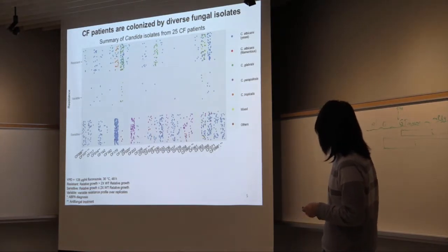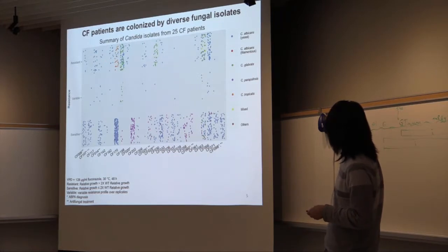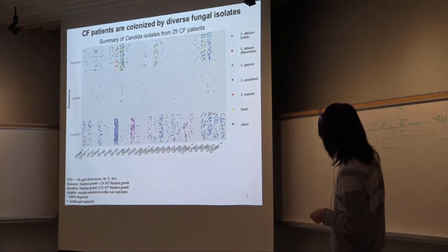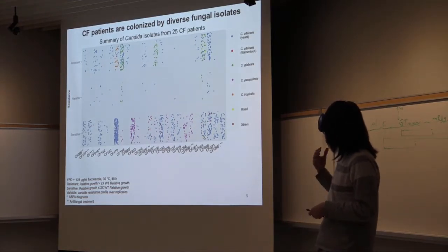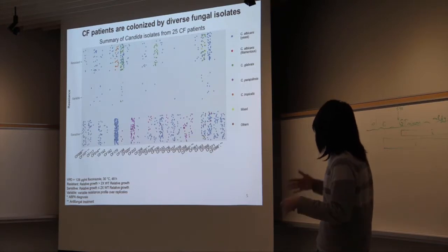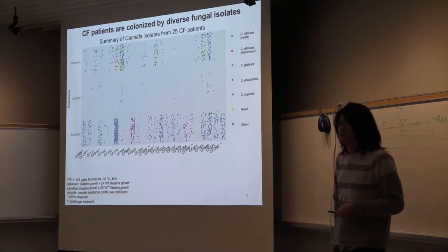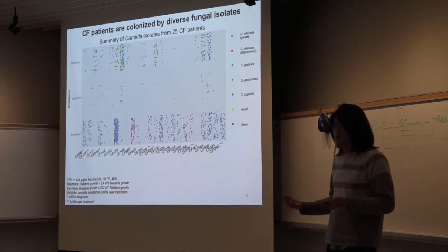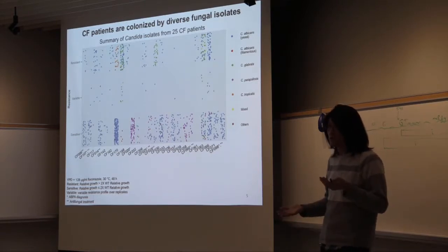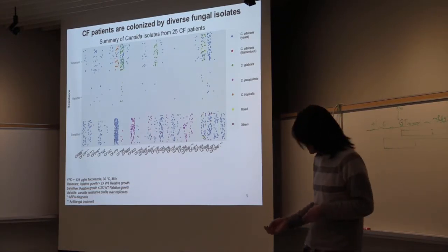I also performed drug resistance assays, binning isolates into three discrete categories — resistant, variable, and sensitive — over replicates. One of the most interesting findings is that, beyond the diversity of species, I see consistent isolation of constitutively filamentous Candida albicans isolates over time. As mentioned earlier, the ability to switch between morphological forms is critical for virulence, so I was curious about what may be causing these phenotypes.